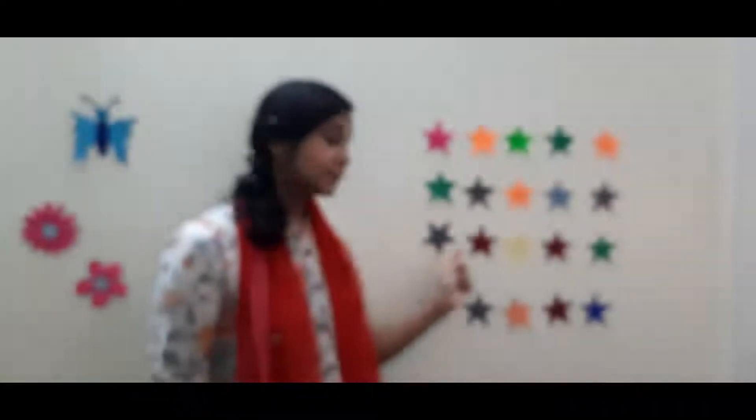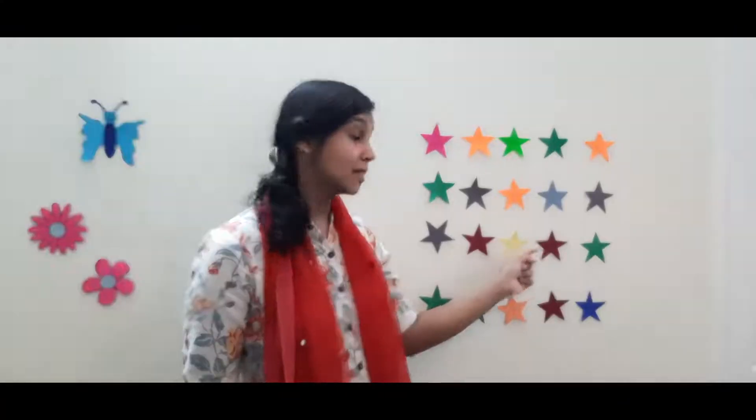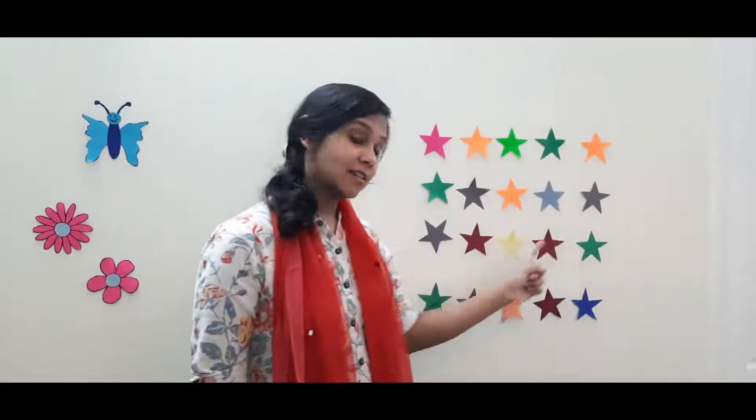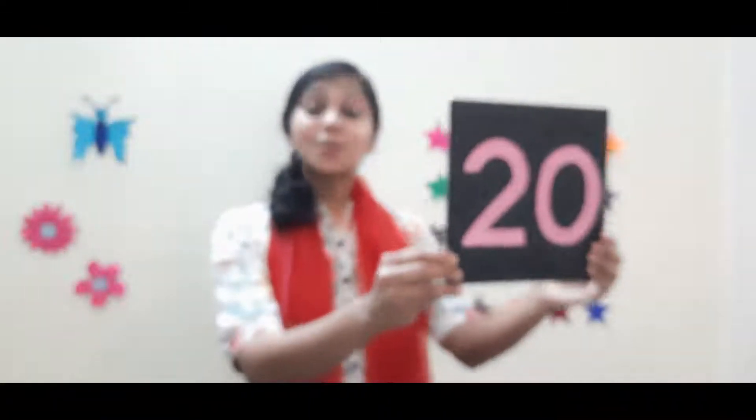Let's begin counting: 1, 2, 3, 4, 5, 6, 7, 8, 9, 10, 11, 12, 13, 14, 15, 16, 17, 18, 19, 20! There are 20 stars here. Number 20! What makes number 20? 20!